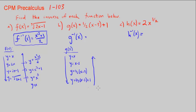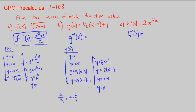Now to unwrap g, we start with y equals x. The opposite of adding 1 is subtracting 1. The opposite of multiplying by one half, or dividing by 2, is multiplying by 2. So y equals 2 times (x minus 1). The opposite of subtracting 3 is adding 3, giving us 2(x minus 1) plus 3.